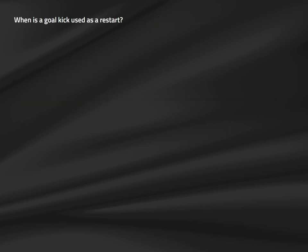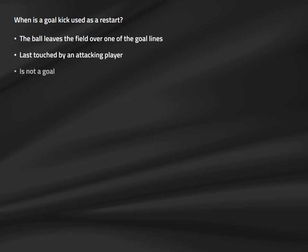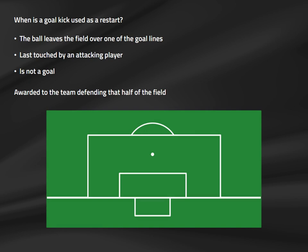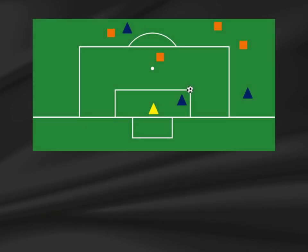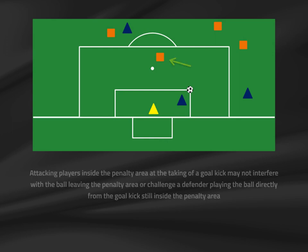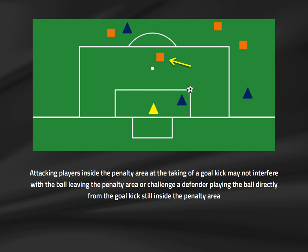Now we move on to the goal kick, covered by Law 16. The goal kick is used when three requirements are met: the ball leaves the field over a goal line, last touched by a member of the attacking team, and a goal is not awarded. The goal kick can be taken from anywhere within the goal area or its lines, and is awarded to the team defending that end of the field. Attacking players may be inside the penalty area when the kick is taken but are not permitted to interfere with the ball or a defending player playing it directly.